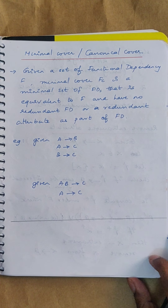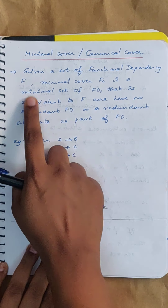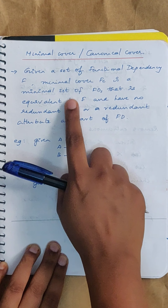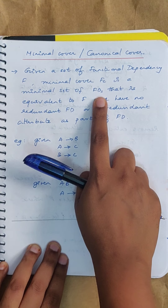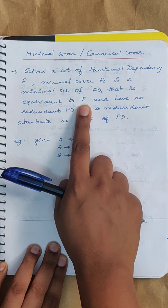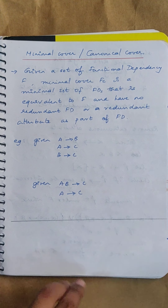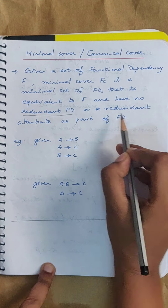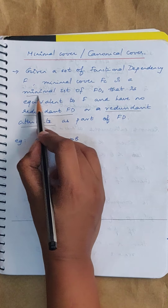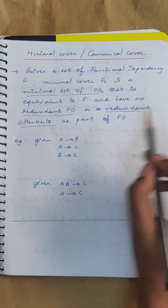Let us try to understand what this minimal cover is. Given a set of functional dependencies F, the minimal cover FC is the minimal set of FDs — meaning functional dependencies — that is equivalent to F and has no redundant FD or redundant attribute. So you are given a set of functional dependencies and you are going to find the minimal set of functional dependencies by removing redundant FDs and redundant attributes.